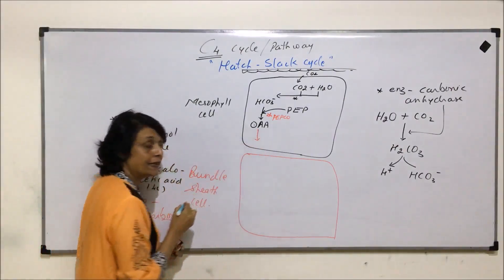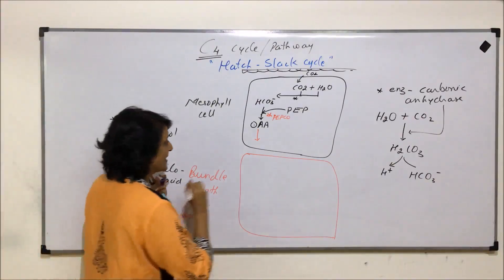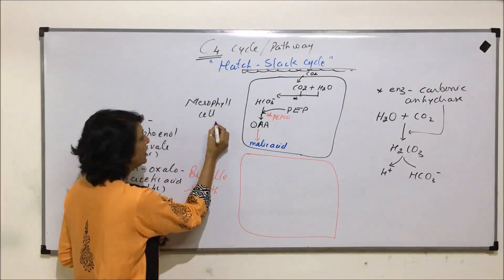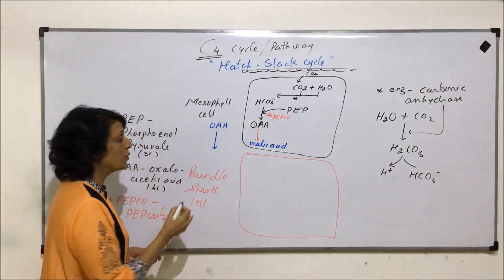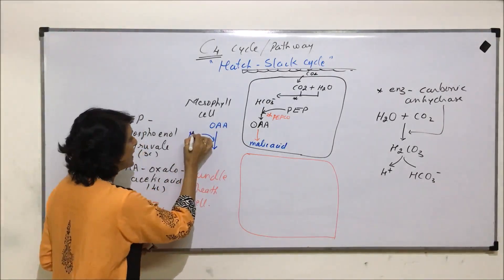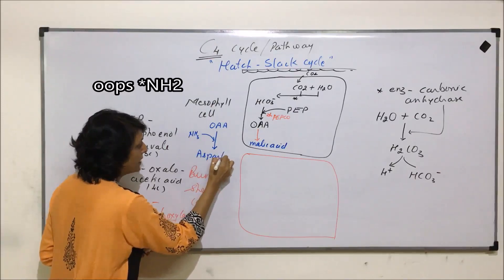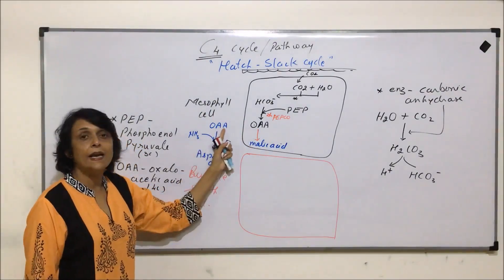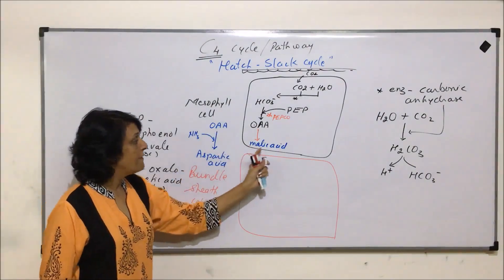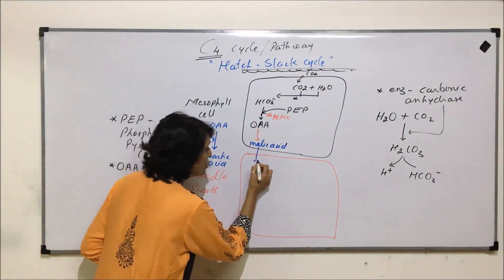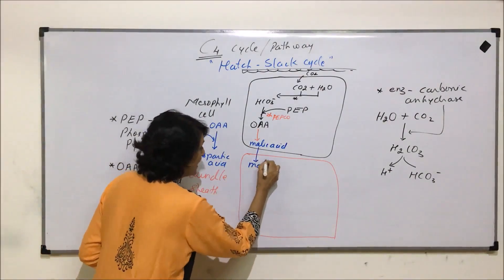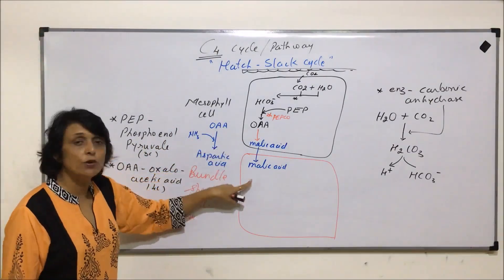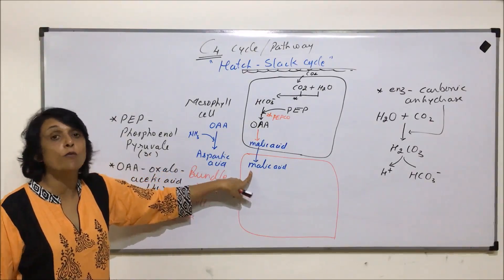This oxaloacetic acid can either change into malic acid, or there is another possibility: oxaloacetic acid undergoes amination — an amino group is added — and it changes into aspartic acid. So there are two possibilities. Oxaloacetic acid can change into malic acid or undergo amination to become aspartic acid. Whether it is malic acid or aspartic acid, they would diffuse into the bundle sheath cells.